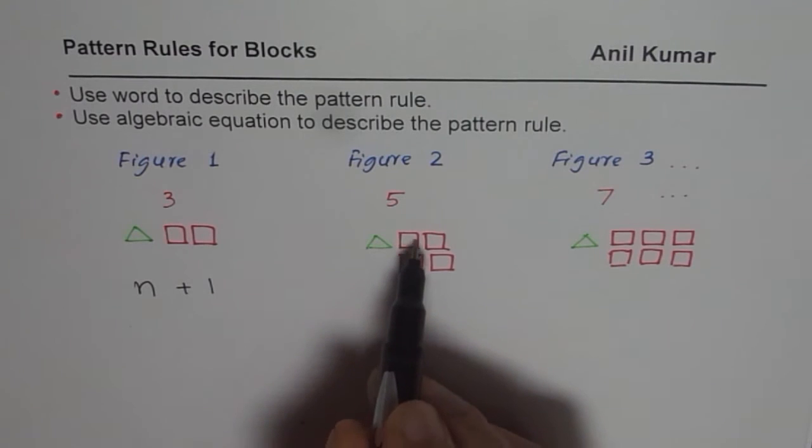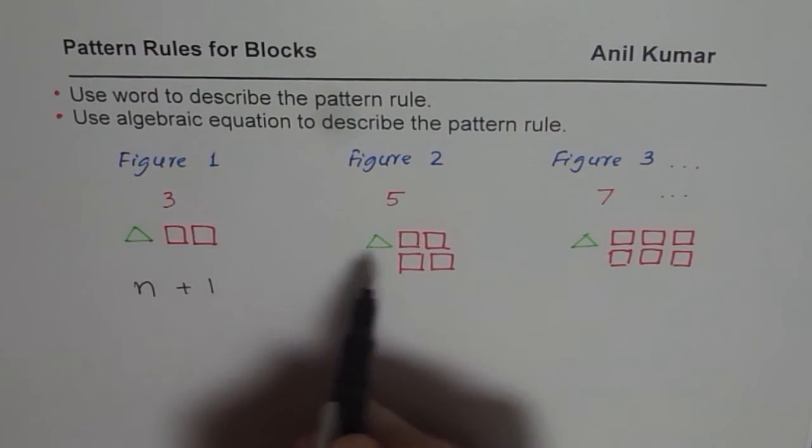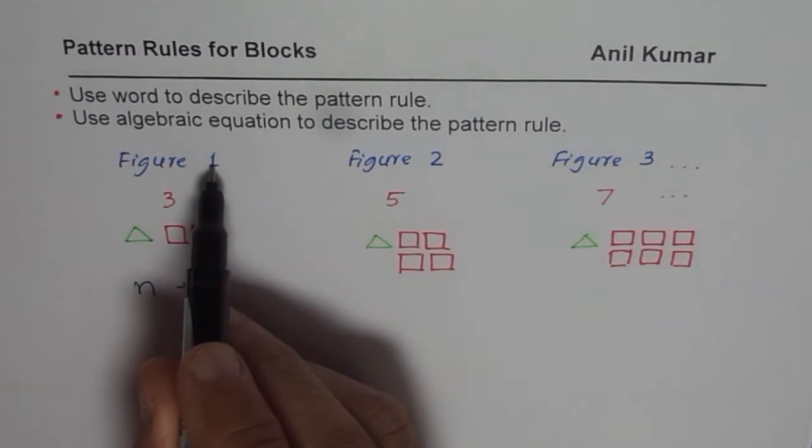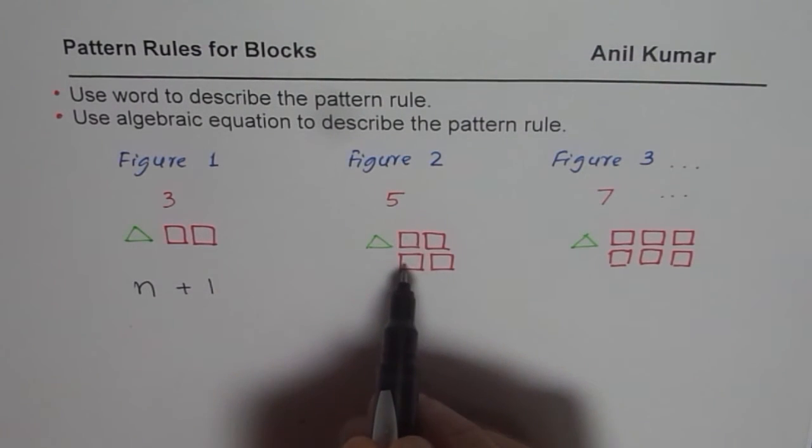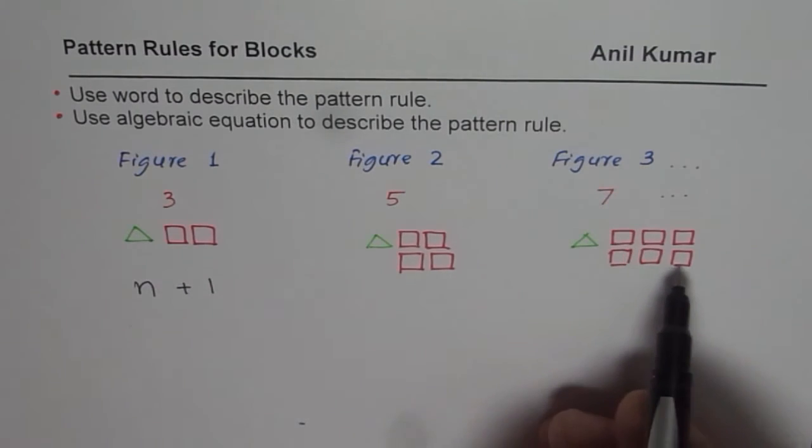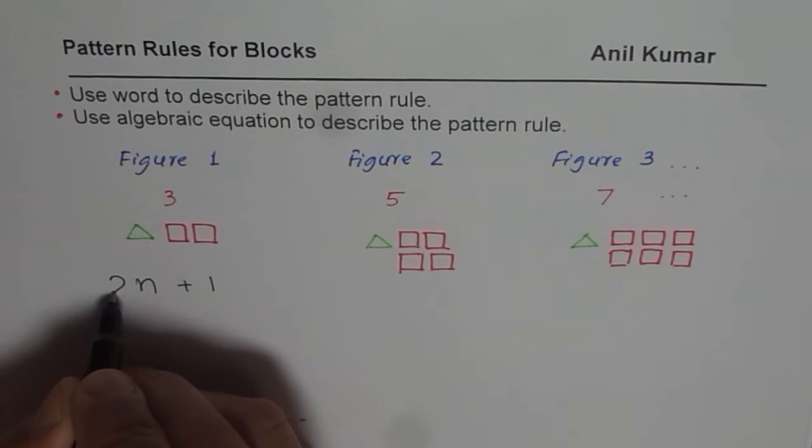So we change by two each time. In figure number one, we have two. In figure number two, we have four, which are changing. In figure number three, we have six. So it is two times n.